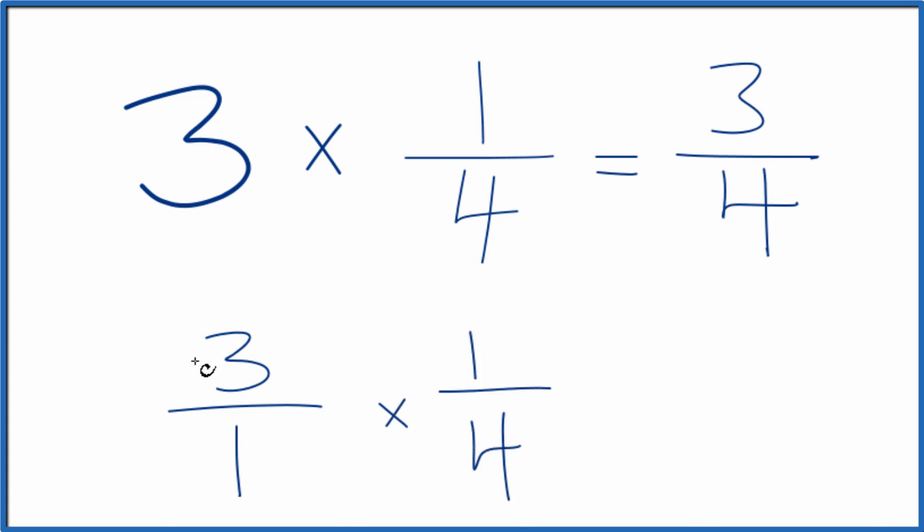And when we multiply fractions, we multiply the numerators, then the denominators. 3 times 1 is 3. 1 times 4, that's 4.